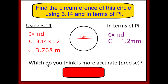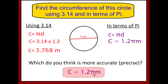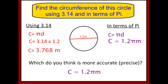Which is more accurate — using 3.14, or expressing the answer in terms of pi? Solving in terms of pi is actually more accurate because when we use 3.14 we've rounded pi, whereas leaving pi as pi gives a precise, exact answer.